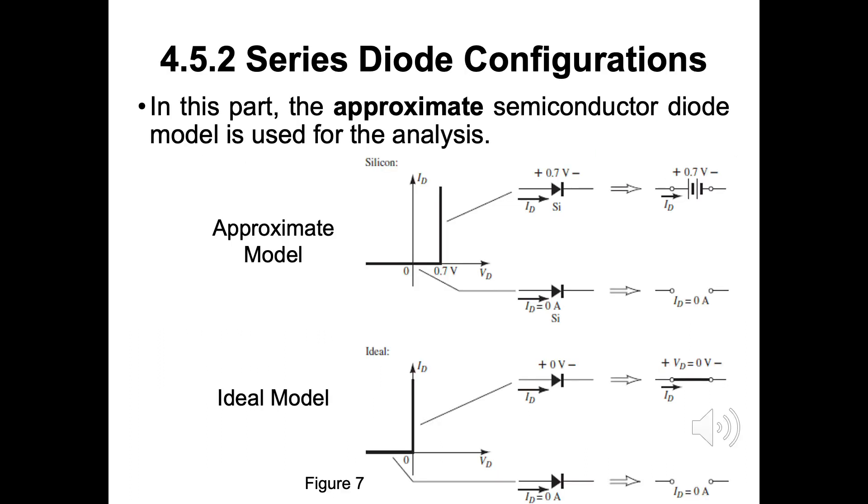In this part, the approximate semiconductor diode model is used for the analysis. Here, we can make an approximation of a silicon as example, 0.7V to be as power source with 0.7V with ID from positive to negative and so on.